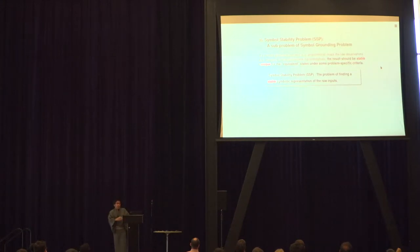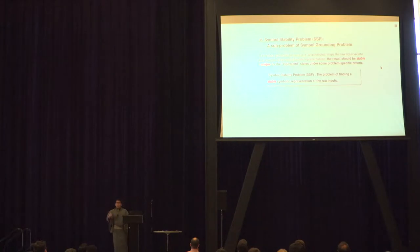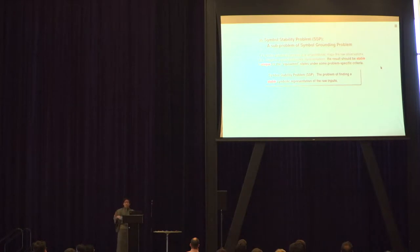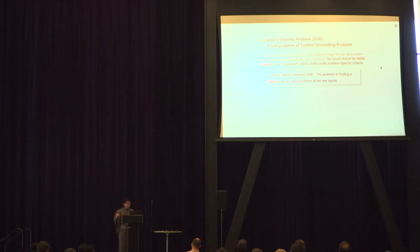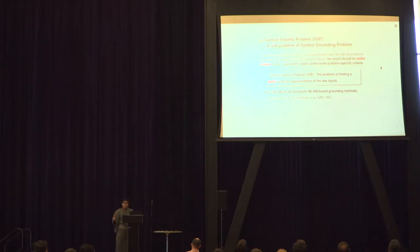We proposed the symbol stability problem — a sub-problem of the symbol grounding problem. If you are trying to ground symbols from raw observations, the symbolic representation needs to be unique under some equivalence relationship, such as a noise threshold. The symbol stability problem is finding a stable symbolic representation of the raw inputs. The SSP affects all stochastic machine learning or neural network-based grounding methods. Many recent neural network architectures use stochastic methods, and stochasticity is not just from the neural network but also from the environment — external stochasticity.